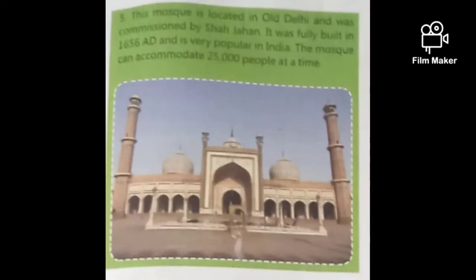Number five: this mosque is located in Old Delhi and was commissioned by Shah Jahan. It was fully built in 1656 AD and is very popular in India. Its name is Jama Masjid. Spelling: J-A-M-A M-A-S-J-I-D.